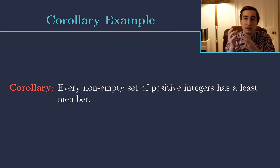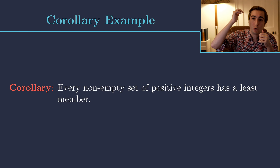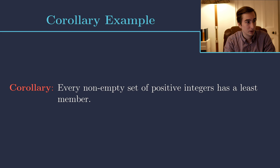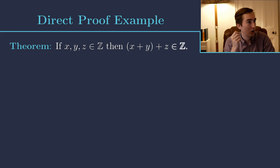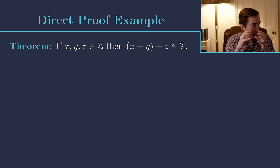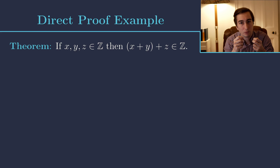Another example of a direct proof is a corollary — a statement whose proof follows directly from a theorem. Here the corollary states: every non-empty set of positive integers has a least member. Recall the well-ordering theorem: any subset of the integers that is bounded below necessarily has a least member. The positive integers are clearly bounded below by zero, so it follows immediately by the well-ordering theorem that they have a least member. This is a direct proof from a previously proven theorem.